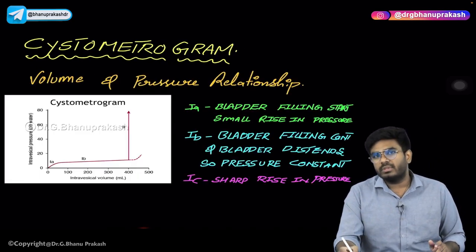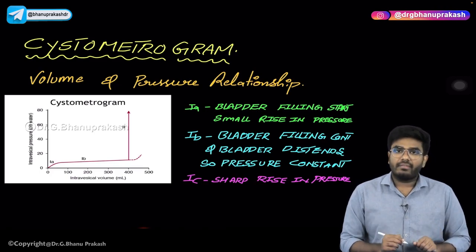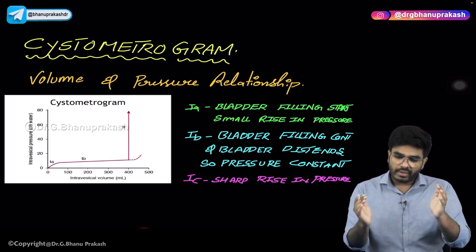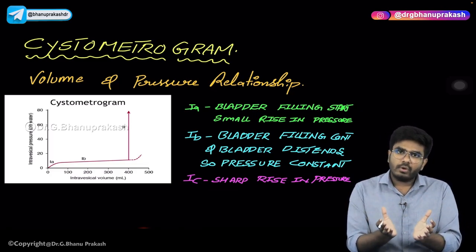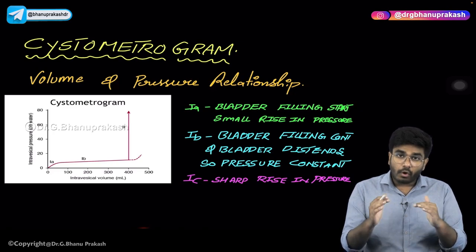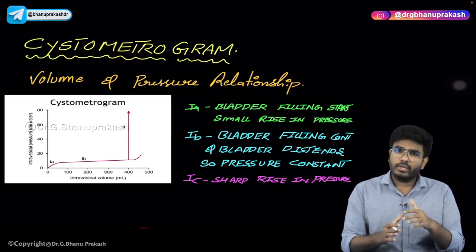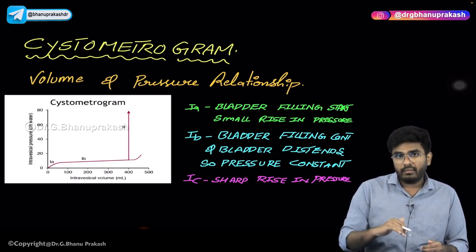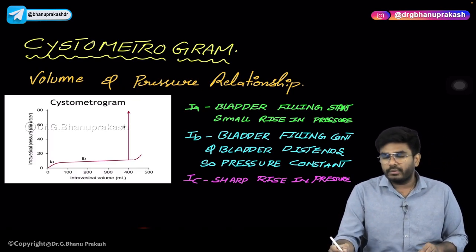Now let's discuss the cystometrogram, which is a very important topic for exams. This graph shows the volume and pressure relationship in the bladder. As urine comes from the kidneys via the ureters and is stored in the bladder, the volume of urine increases. Logically, as more urine enters the bladder, the pressure inside should also increase — and that is the relationship we will now discuss.